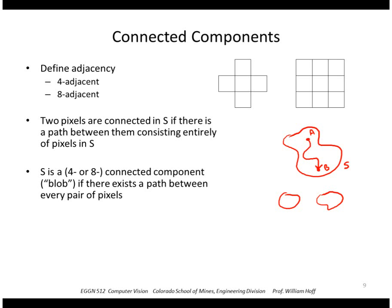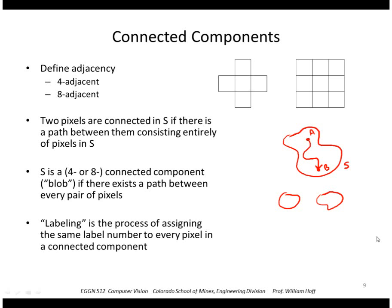Labeling is the process of assigning the same label number to every pixel in a connected component. So here I would assign 1s to every pixel in this blob and 2s, for example, to every pixel in this blob. So I would have an image of 1s or 2s or 0s.